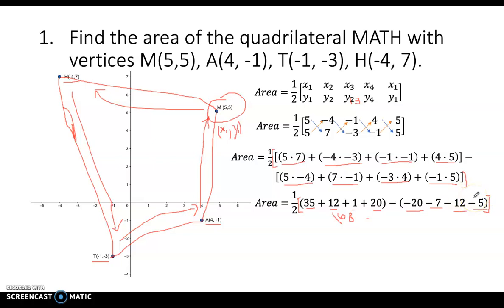Minus 5. Negative 39 minus 5 is negative 44.